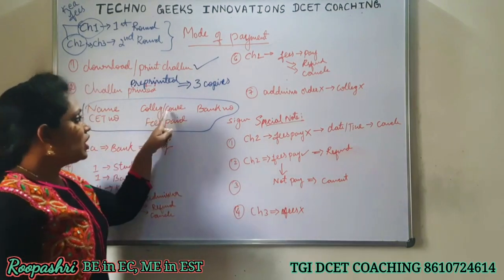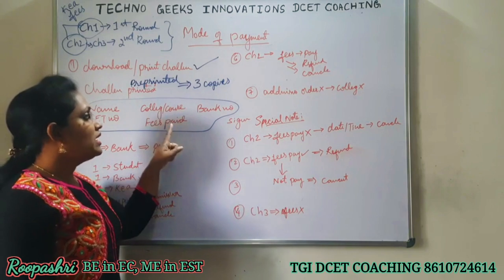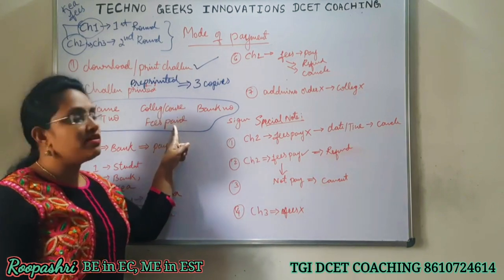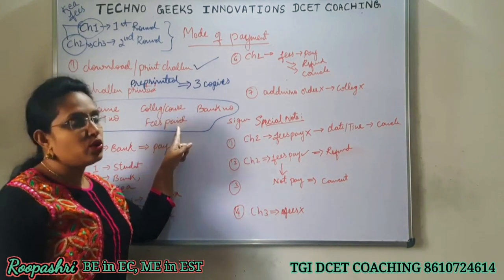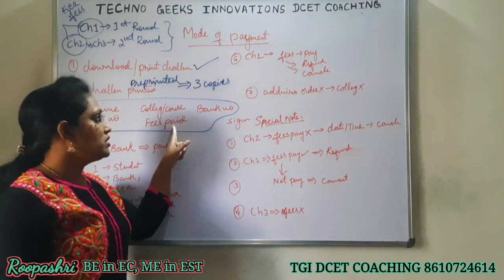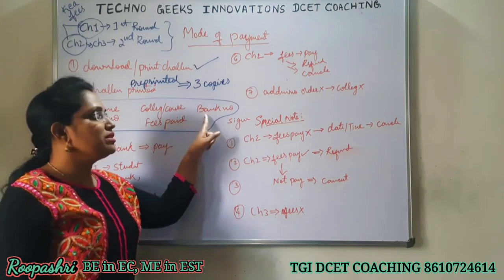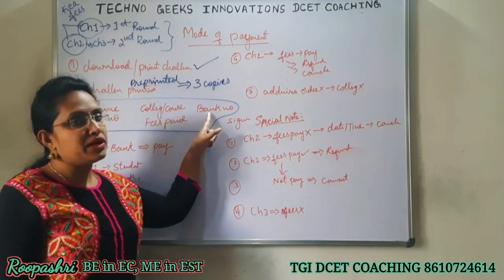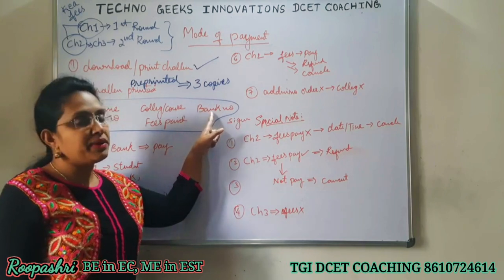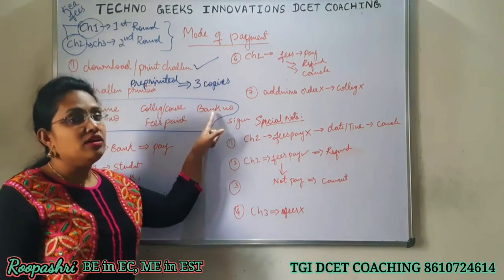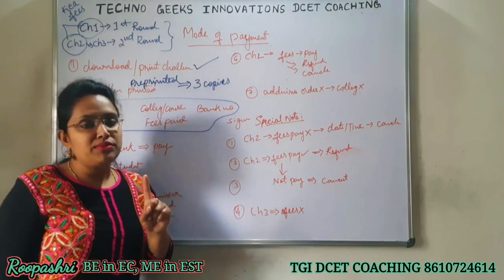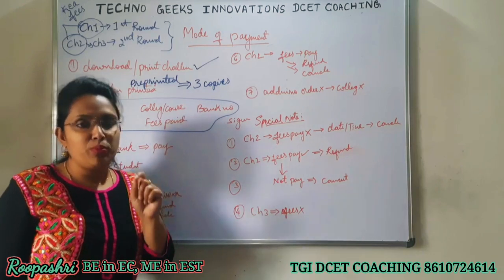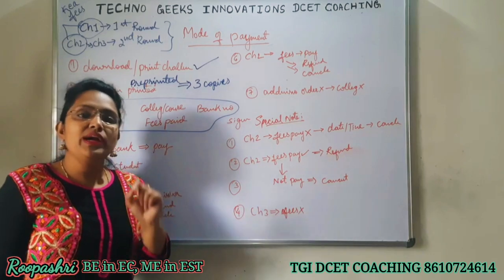So, for that college and course, based on your reservation category, the amount you need to pay will be mentioned. Above that, which bank you need to pay at and the bank number will also be provided. K.E.A. will mention which bank to pay at, and you need to pay at that specified bank.